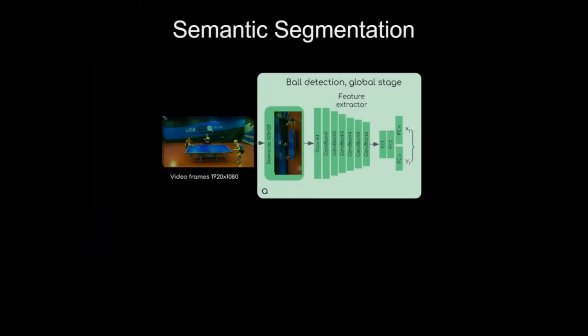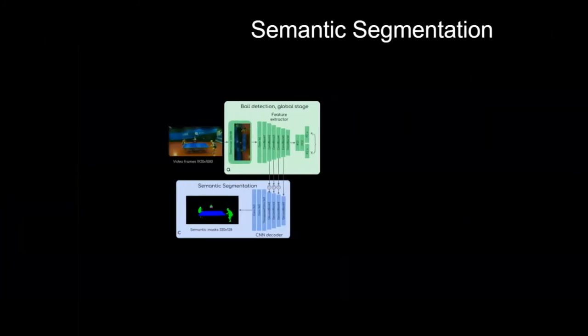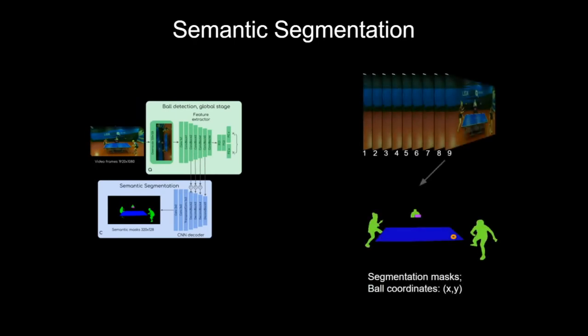Semantic segmentation branch uses feature maps from the global stage of feature extractor. It predicts human, table, and scoreboard masks on the last frame of the input stack.